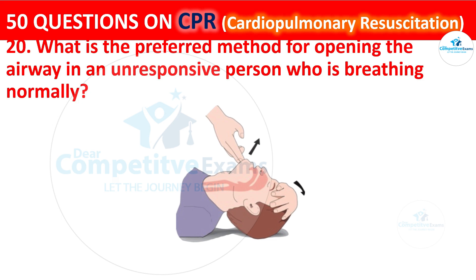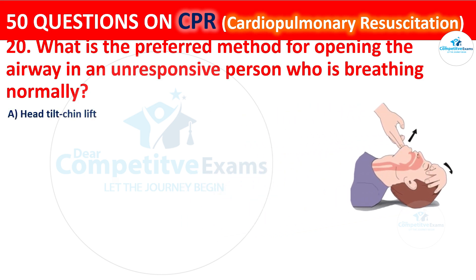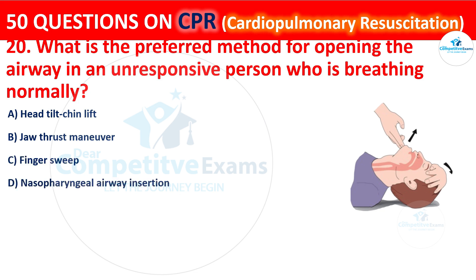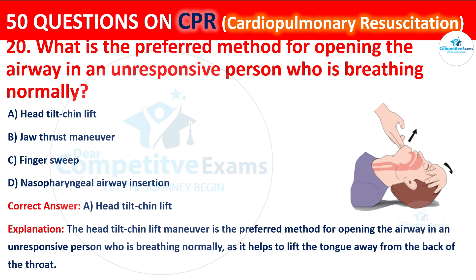Question 20: What is the preferred method for opening the airway in an unresponsive person who is breathing normally? Your options are: Head Tilt Chin Lift, Jaw Thrust Manoeuvre, Finger Sweep, or Nasopharyngeal Airway Insertion. The correct answer is A: Head Tilt Chin Lift. The Head Tilt Chin Lift manoeuvre is preferred as it helps to lift the tongue away from the back of the throat.